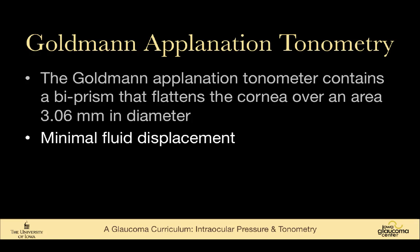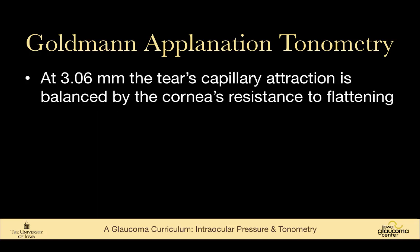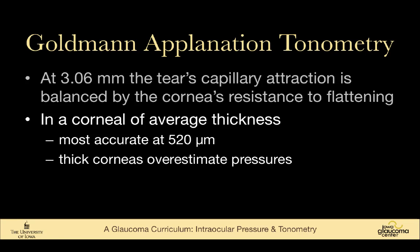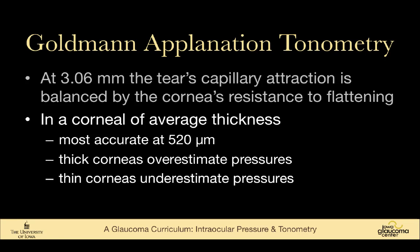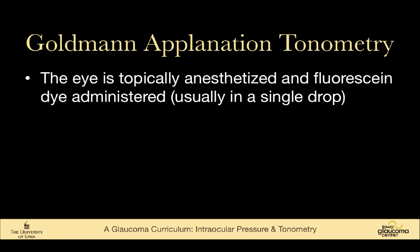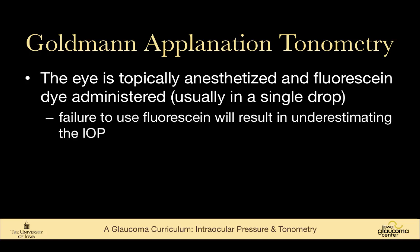The Goldman applanation tonometer contains a biprism that flattens the cornea over a diameter of 3.06 millimeters, with very little fluid displacement within the eye during tonometry. At this diameter, the tear's capillary attraction — pulling the tono tip toward the globe — is balanced by the cornea's resistance to being flattened. This is most accurate for a cornea of average thickness, around 520 microns. Thick corneas overestimate pressure; thin corneas underestimate it. To perform this, the eye is topically anesthetized and fluorescein dye is administered. Failure to use fluorescein will result in underestimating the intraocular pressure.